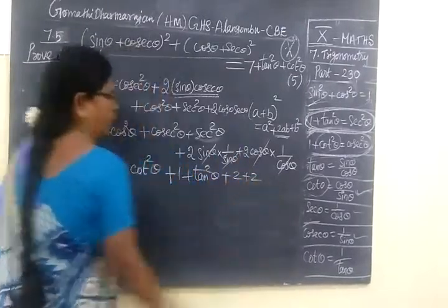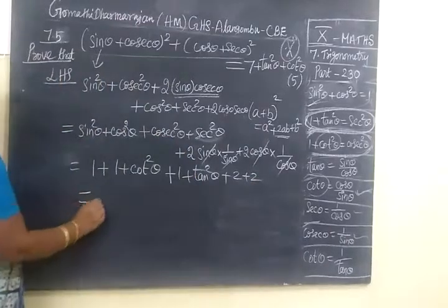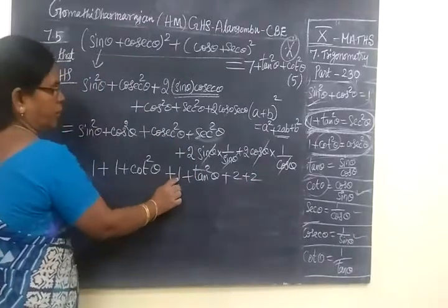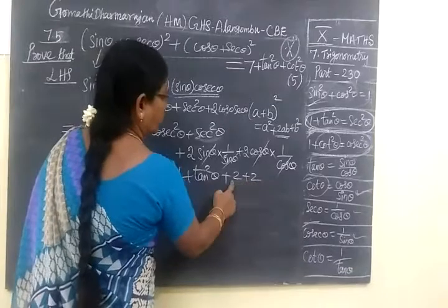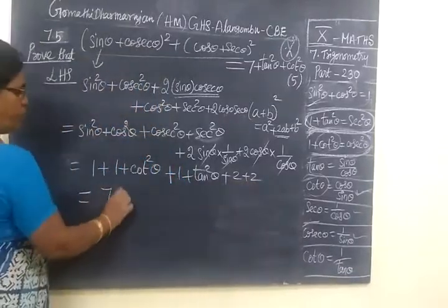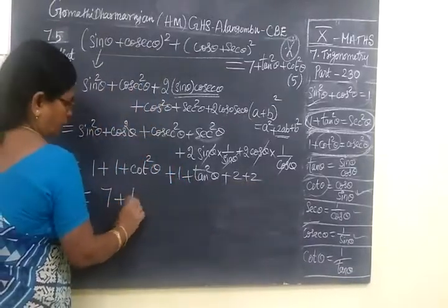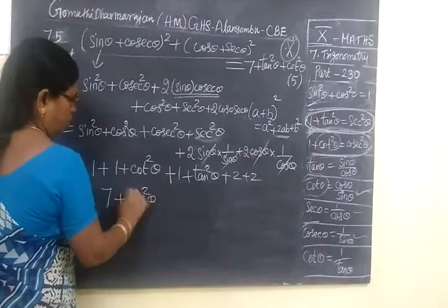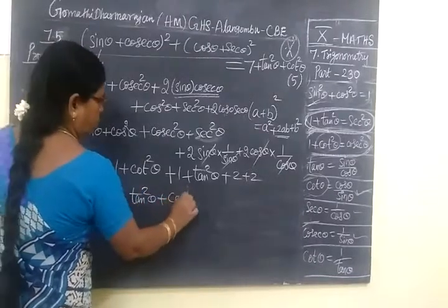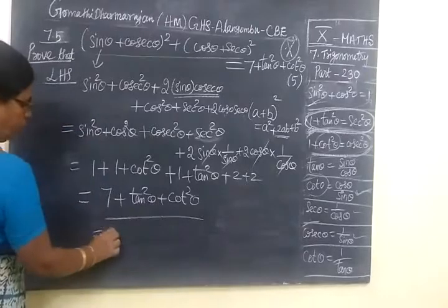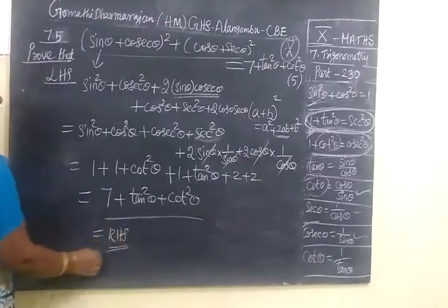Plus equals 2 plus 2. 2 plus 2, so equal to 1, 2, 3, then equal to 7. So 7 plus tan square theta plus cot square theta, so equal to RHS. Such an easy problem.